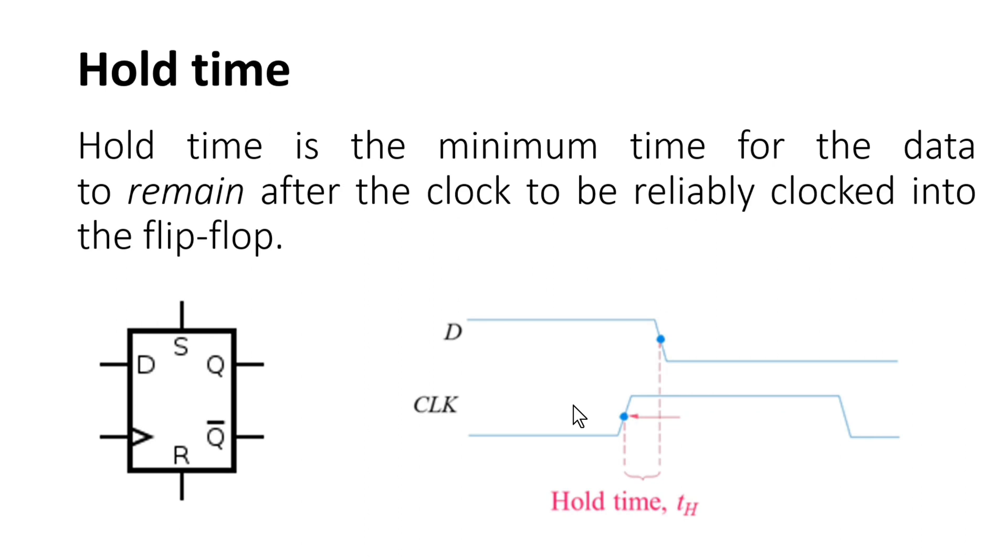Now another very important thing: we need to hold the value of D for some minimum time after this clock edge so that it can reliably pass to the Q, and this minimum time after this clock edge is called hold time.